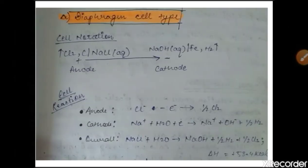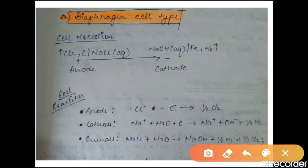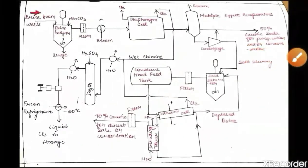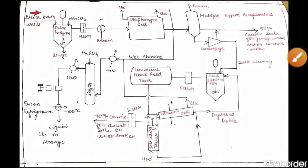At the anode, chloride ions are oxidized to produce chlorine gas. At the cathode, water splits into OH⁻ and H⁺ ions; sodium ions (Na⁺) combine with hydroxyl ions (OH⁻) to form NaOH — caustic soda — along with hydrogen gas. The overall reaction is: NaCl + H₂O → NaOH + H₂ + Cl₂. These gases are ejected from the diaphragm cell.